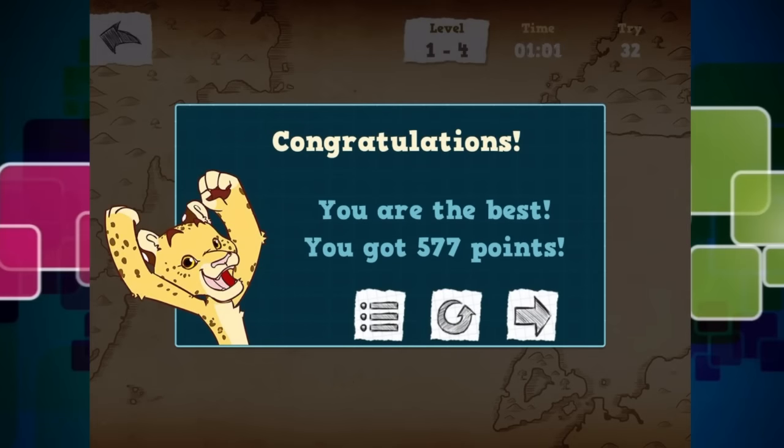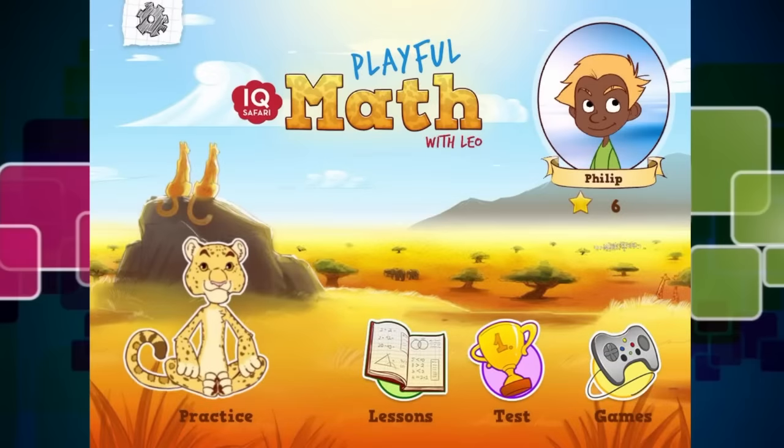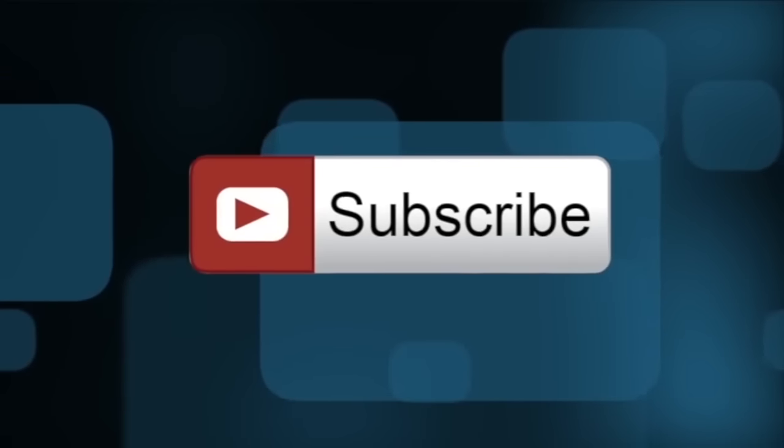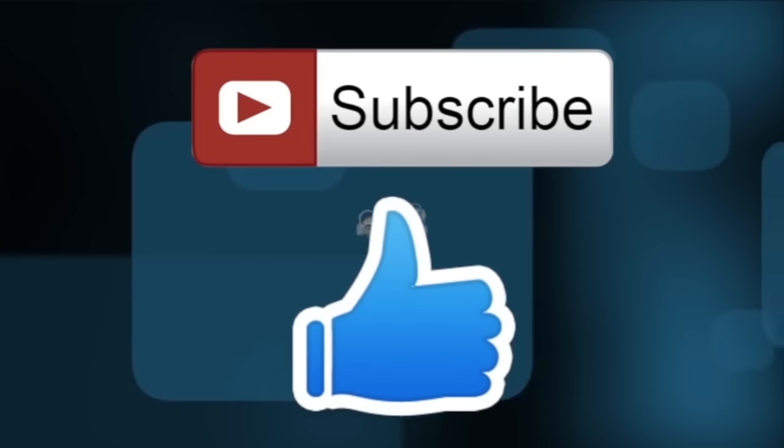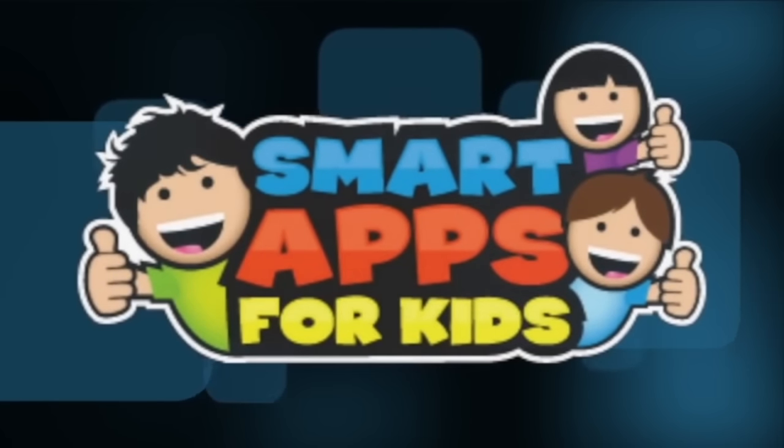So it says congratulations. You are the best. You got 577 points. That's pretty cool isn't it? So as you can see there is another two games for you to check out. Bubble Pop and Memory Cards. But this game is pretty awesome. It is fun as well as learning new math. How cool. You can download IQ Safari Math from the iTunes store. Thank you for watching. Now don't forget to subscribe and give us a big thumbs up for new app demos every single day. Thank you.